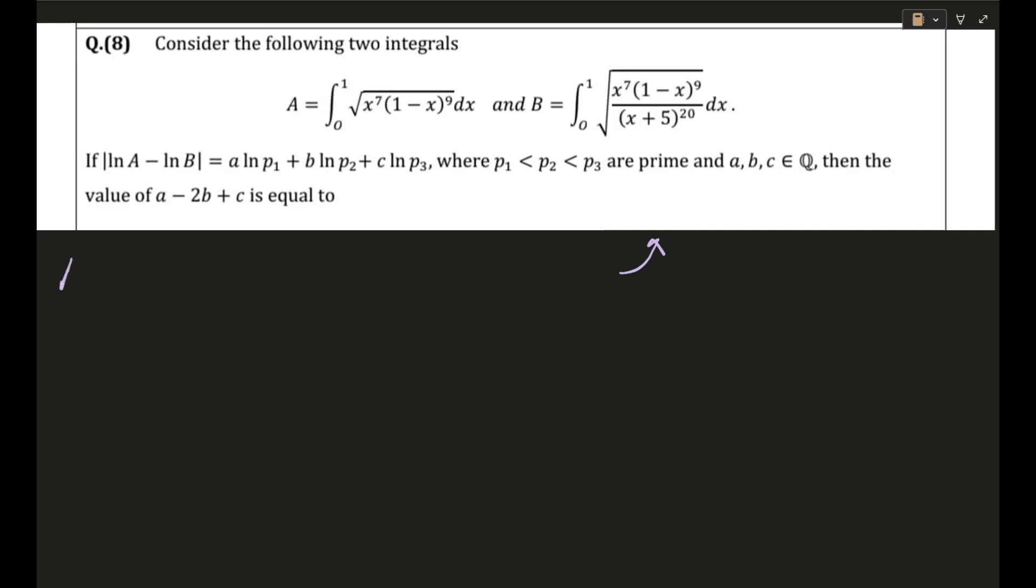Okay so first of all let's write down the integrals in some good exponential form. So A is equal to integral 0 to 1 of √(x^7(1-x)^9) dx and B is equal to integral 0 to 1 of √(x^7(1-x)^9)/(x+5)^20 dx.